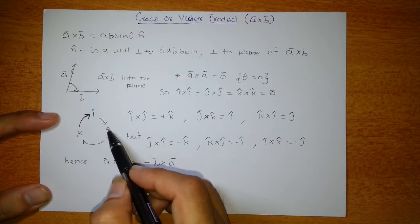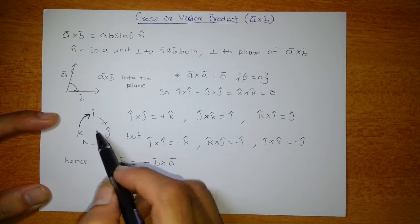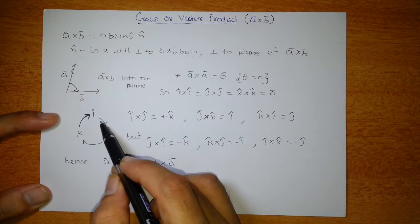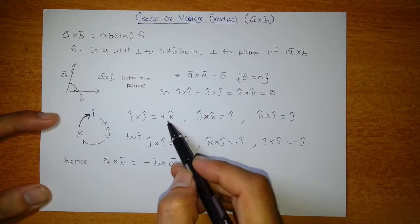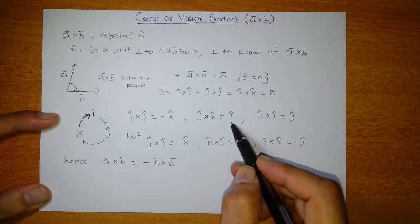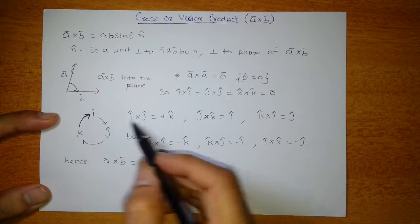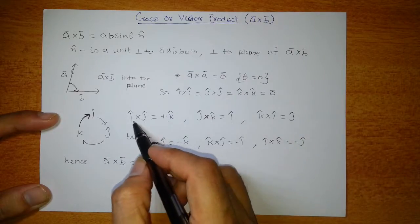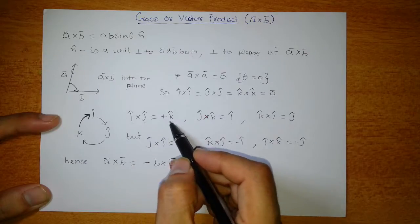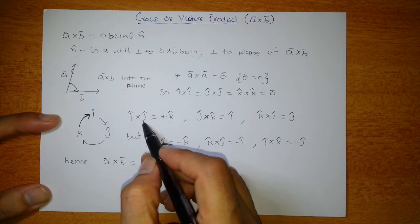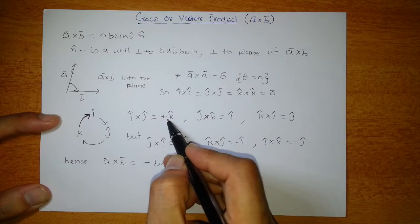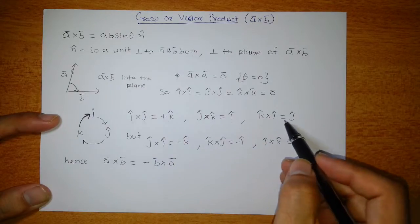For i cross j, we use the cyclic rule: arrange i, j, k in cyclic order. If we move along the arrows, i cross j gives positive k; j cross k gives positive i; and k cross i gives positive j. The result of i cross j is a vector perpendicular to both, and the only option is k̂. Since the magnitudes of î and ĵ are both 1, the coefficient is also 1. Similarly for the other two pairs.